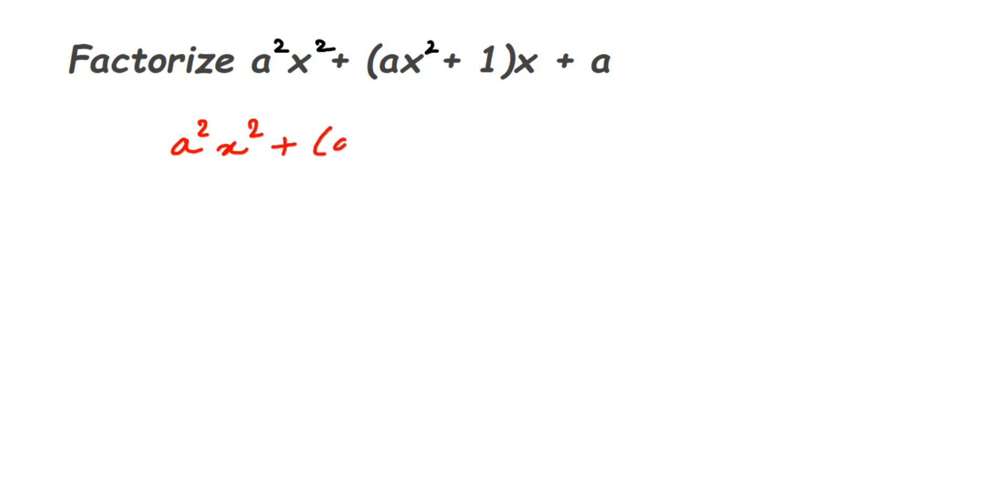I'm gonna just rearrange the terms, so a²x² + a, this last term, plus we have (ax² + 1)x.